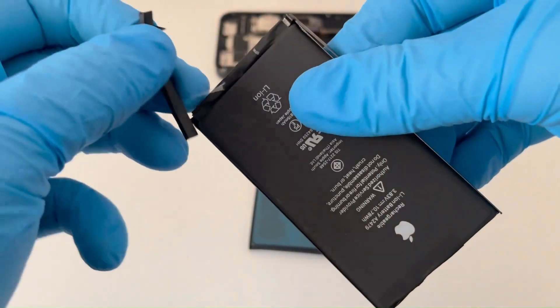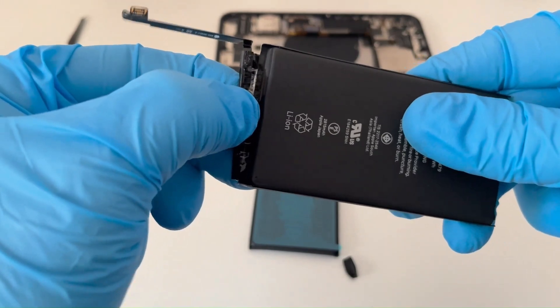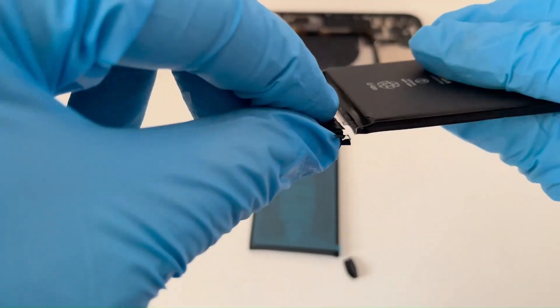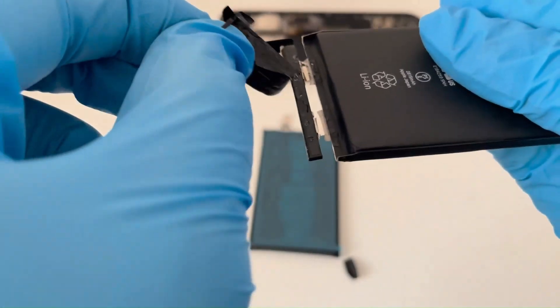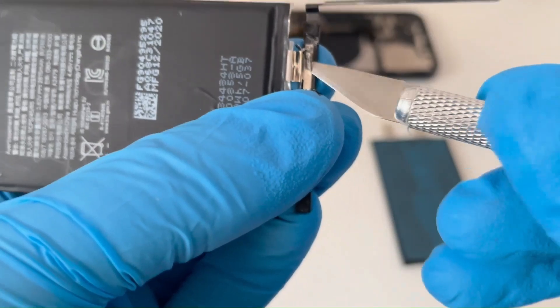Now I can start to peel off the tapes that hold and isolate the BMS board. This is not an easy procedure considering the fragility of this piece. A wrong or sudden movement can lead to its bending or breaking.